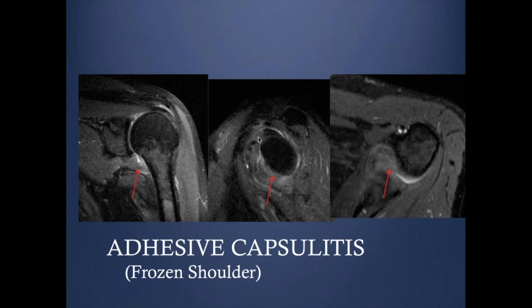A very important point: these findings must be assessed in the absence of a history of trauma. If a patient has a history of trauma, you will commonly see thickening of the capsule. So the presence of capsule thickening or edema does not by itself mean adhesive capsulitis. These findings are typically in a spontaneous shoulder presentation without any history of trauma.